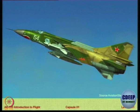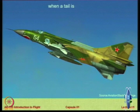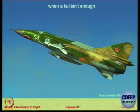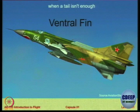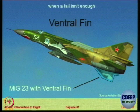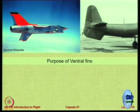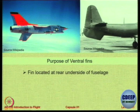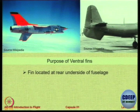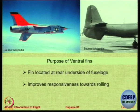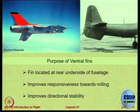In this picture I want you to focus on the part required when a tail is not enough — you then need extra things, and that is the ventral fin. This is the MiG-23 with the ventral fin. A ventral fin is something mounted at the rear underside of the fuselage. It improves responsiveness towards rolling and also improves the directional stability of the aircraft.